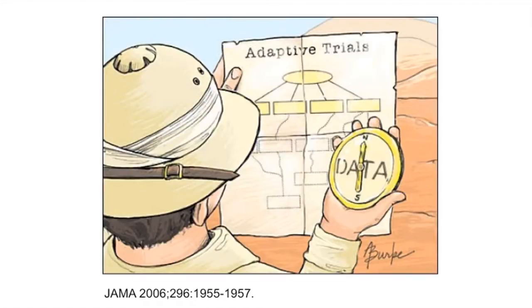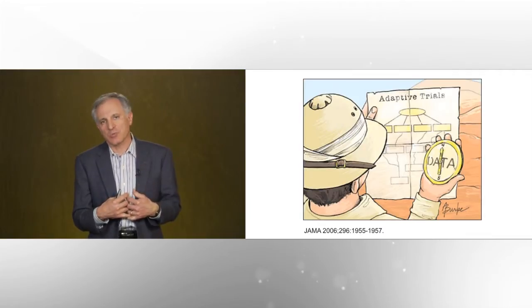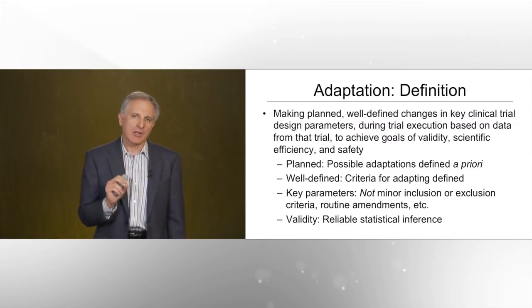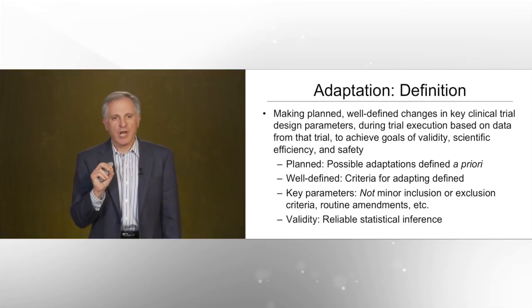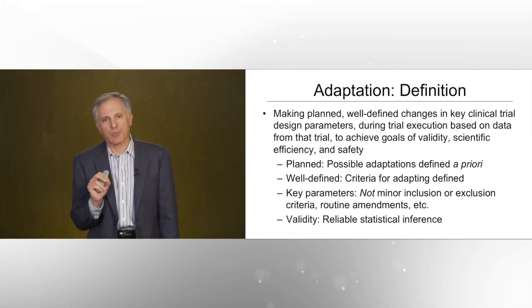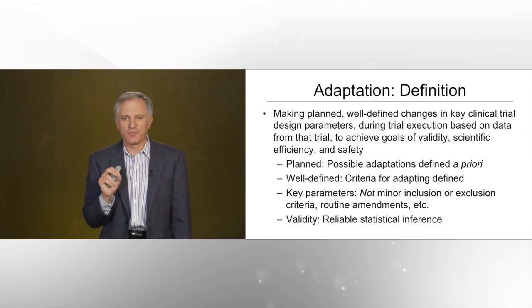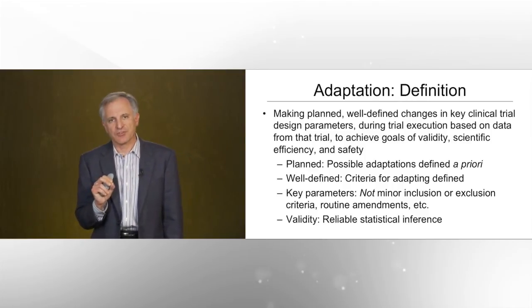This cartoon, taken from JAMA back in 2006, simply shows that an adaptive trial differs from a traditional trial in that there are multiple paths that can be taken from the beginning of the trial — shown by the oval at the top — to the end of the trial, and it is the data that accumulates within the trial itself that determines which path is taken. So when we talk about an adaptive clinical trial, we mean a trial in which we make planned, well-defined changes in key clinical trial design parameters during trial execution, based on data from that trial itself, to achieve goals of validity, scientific efficiency, and safety.